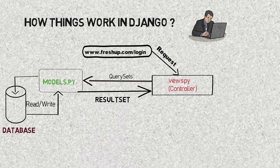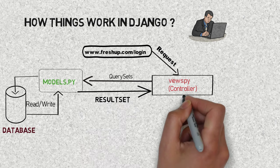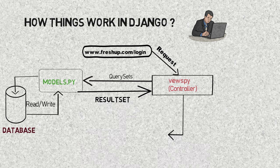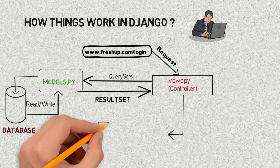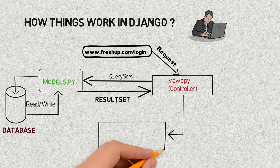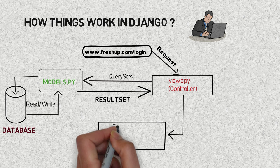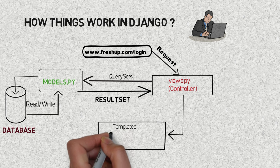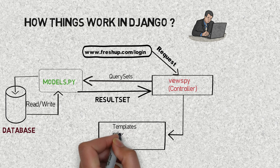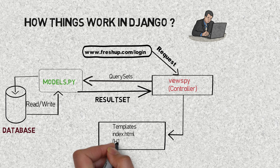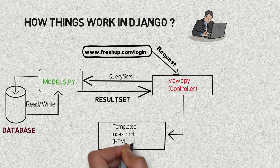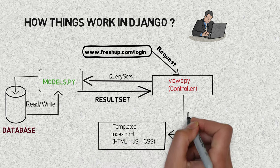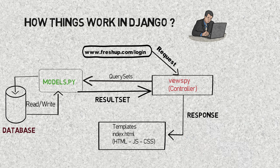Once the read and write operations complete successfully, the required data is fetched from the database and a result set is sent back to the views. The views then generate a response and send it to the templates — in Django, these are the HTML, CSS, and JavaScript pages. That is how things work.